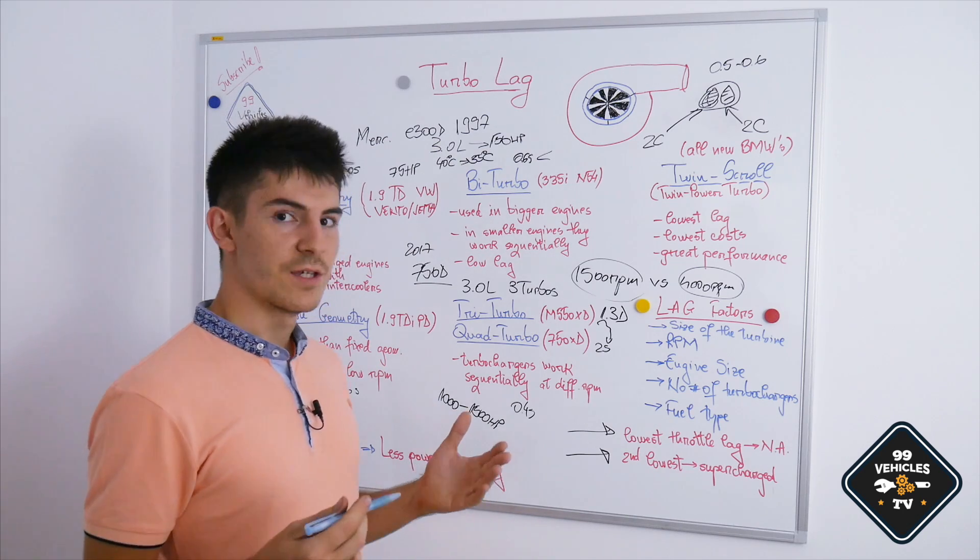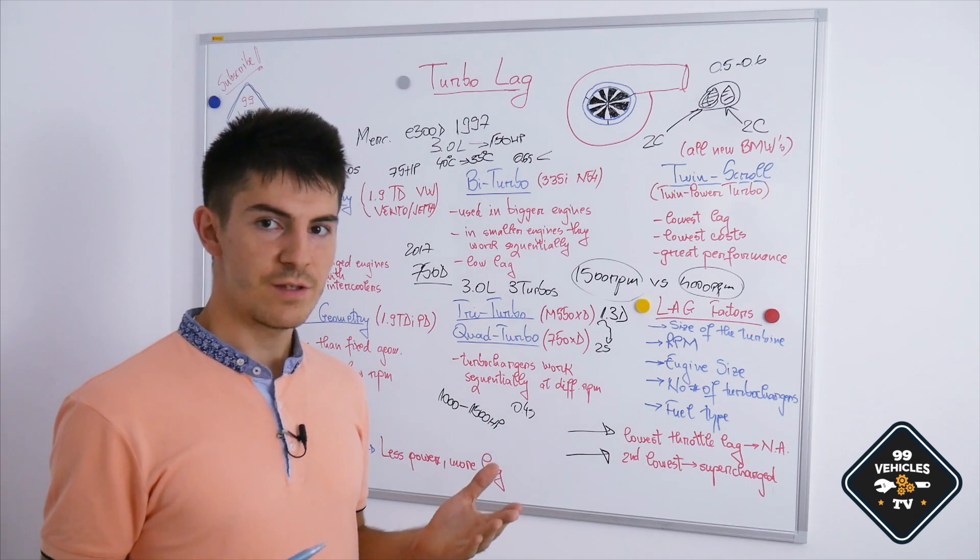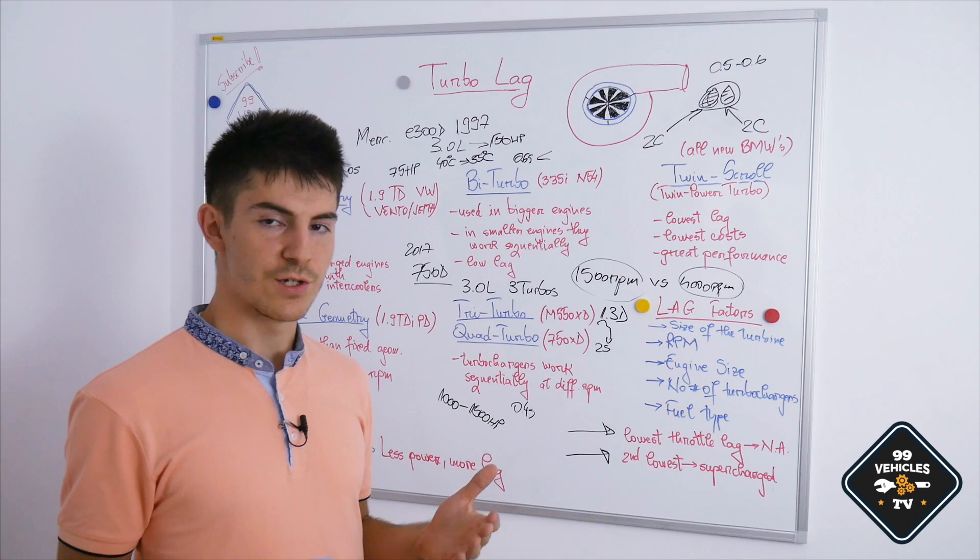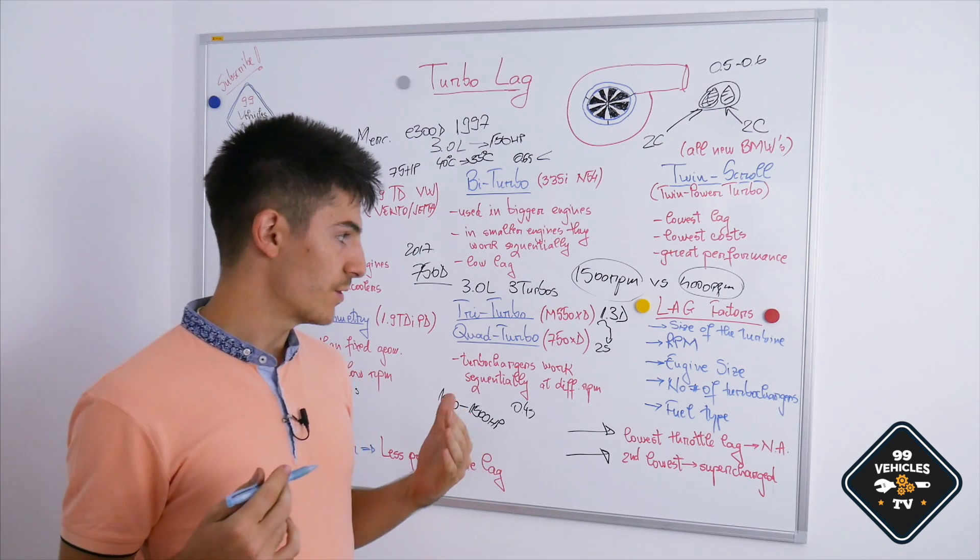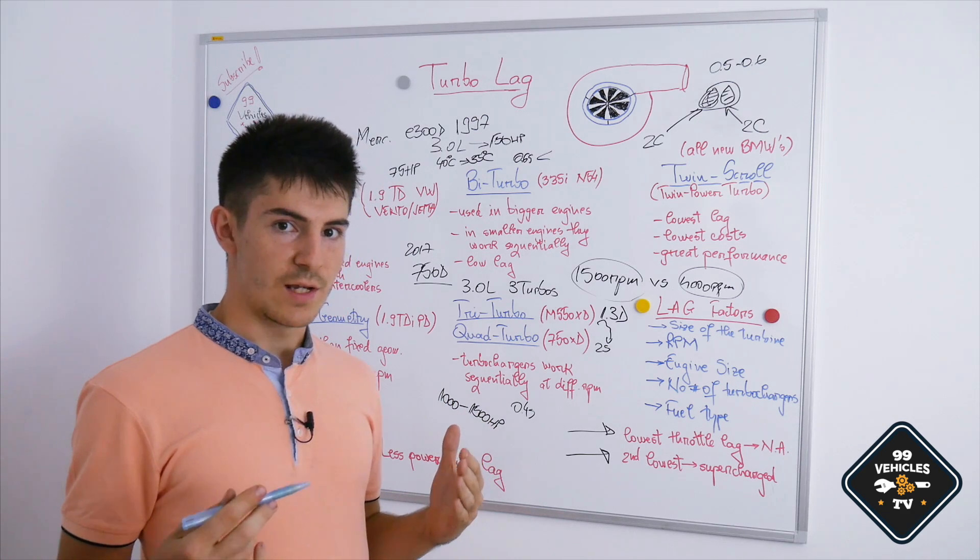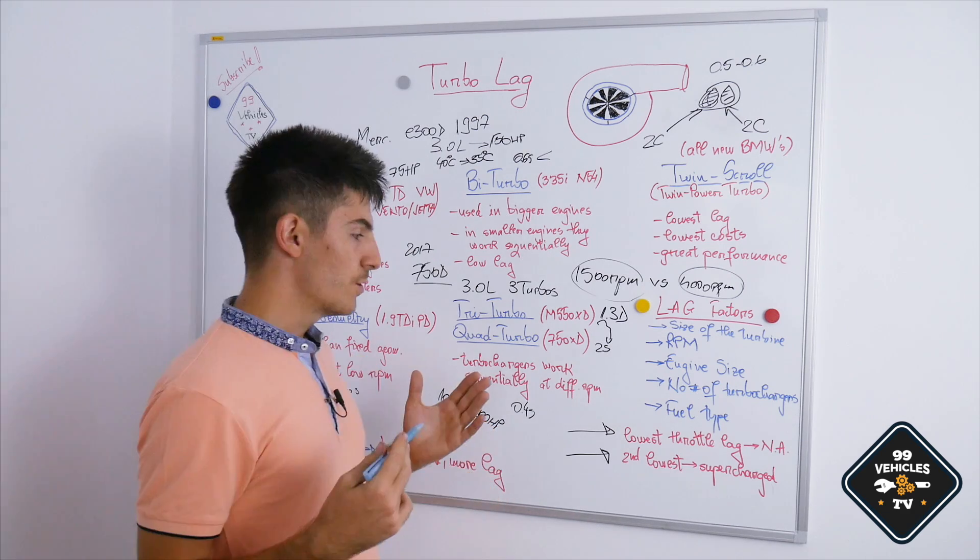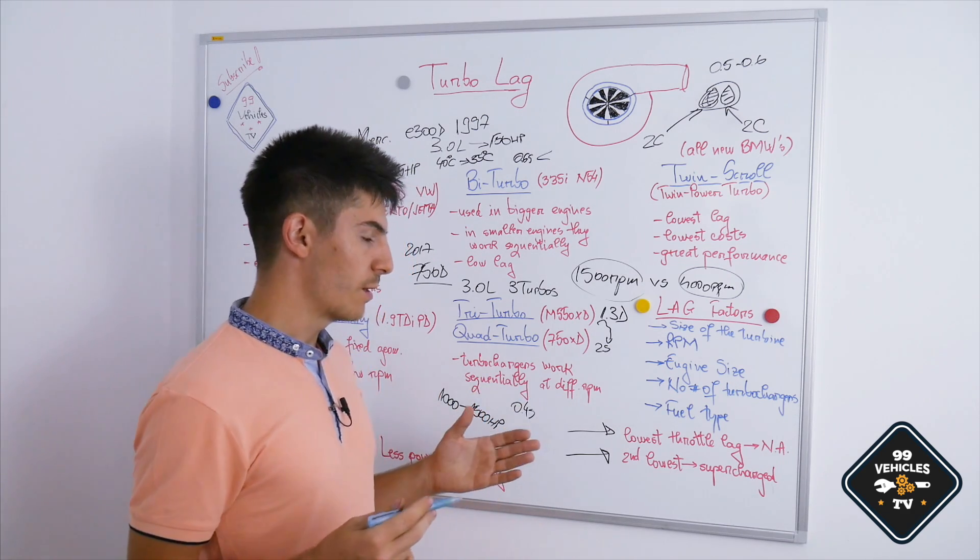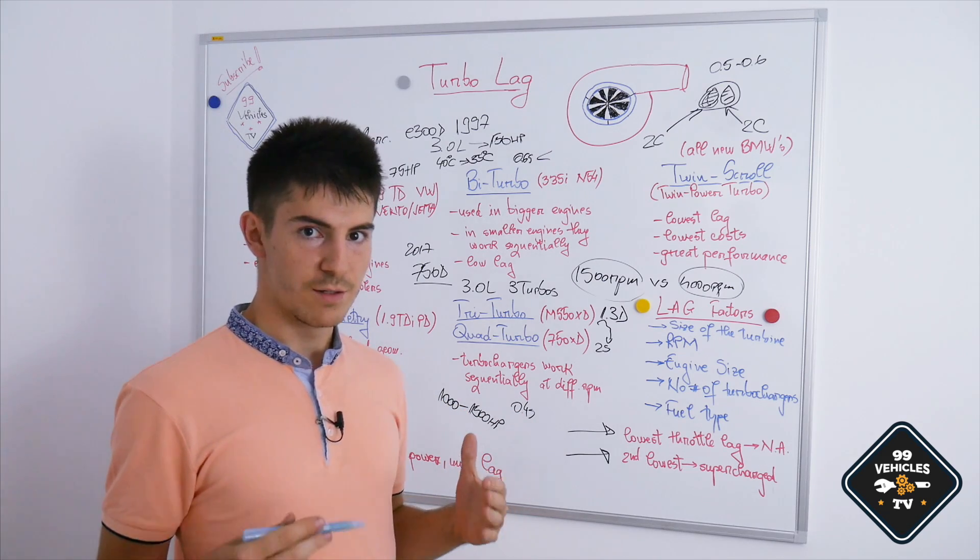Another important factor is engine RPM. Let's say if we have 1500 RPM and we floor the acceleration, we will have a higher delay, a higher lag, than if we would floor the acceleration at, let's say, 4000 RPM. So having a higher RPM will help us build pressure within the turbine much faster.